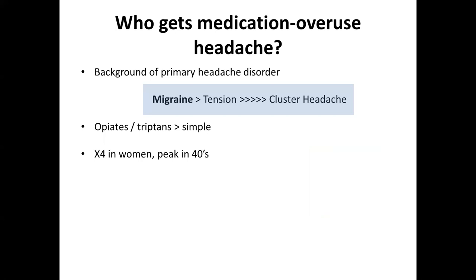Who gets medication overuse headache? There must be a background of a primary headache disorder — people who have migraine or tension-type headache. It can also occur in patients with chronic pain conditions who have a background of migraine and are taking lots of painkillers. For example, it may occur in someone who had migraine as a teenager or in their 20s, who then develops hip problems or back pain and begins taking lots of painkillers, and then finds that headaches begin to creep in.